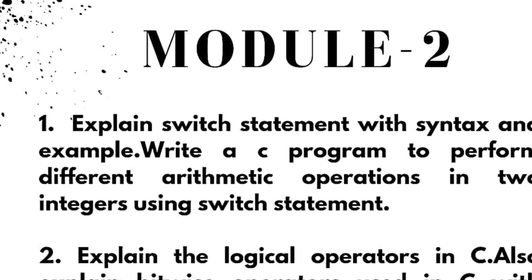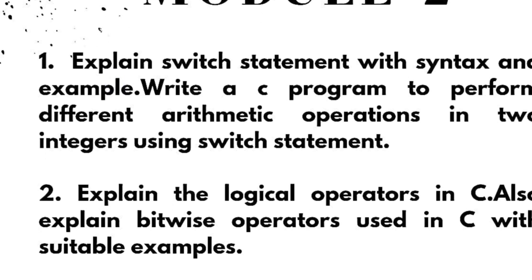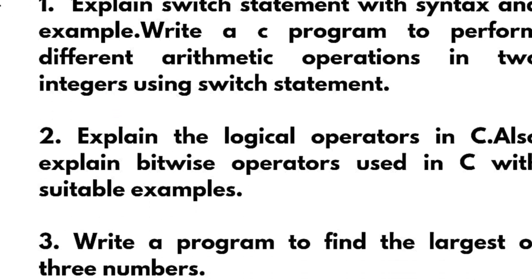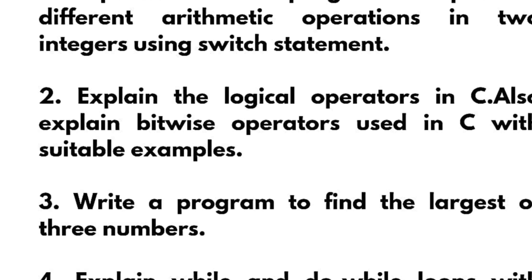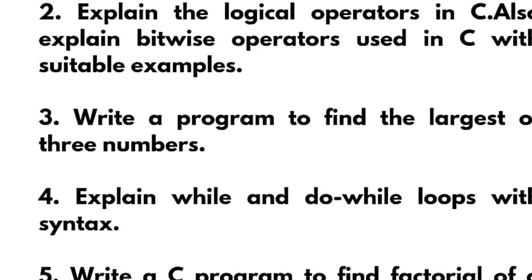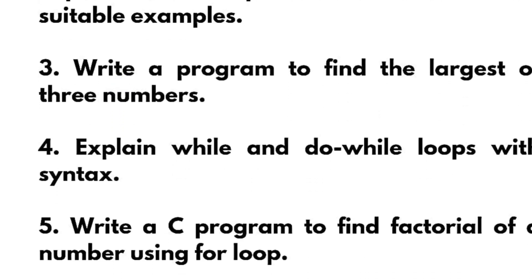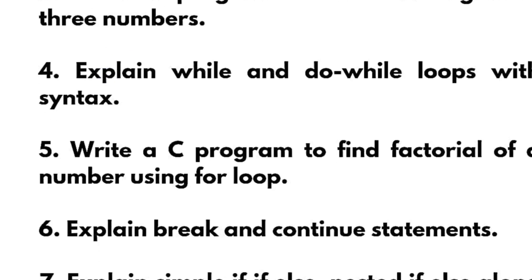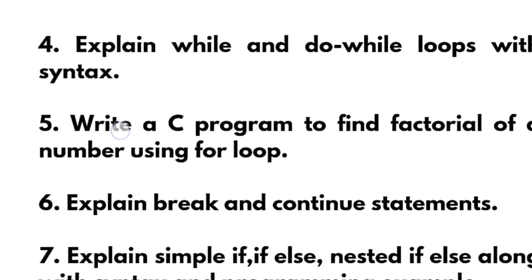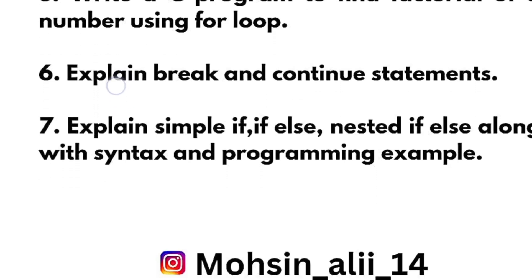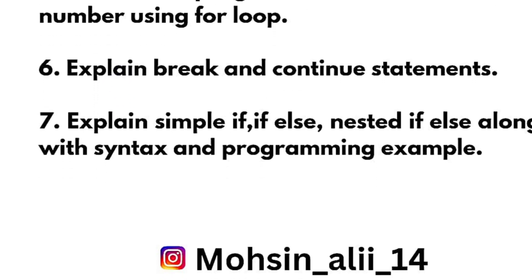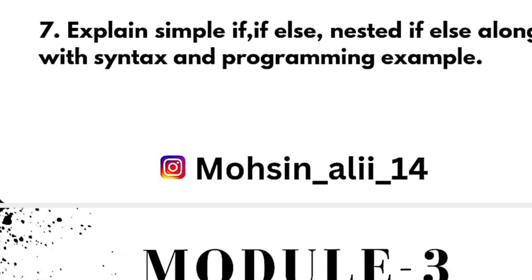Next is module two. Explain switch statement with syntax and example. Write a C program to perform different arithmetic operations on two integers using switch statement. Explain the logical operators in C and also explain bitwise operators used in C with suitable examples. Write a program to find the largest of three numbers. Explain while and do-while loops with syntax. Write a C program to find the factorial of a number using for loop. Explain break and continue statements. Explain simple if, if-else, and nested if-else along with syntax and programming examples.